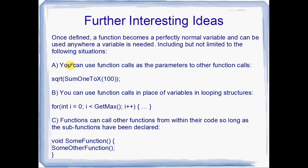Further interesting ideas. So once defined, a function becomes almost exactly the same as a variable of its own return type. So if a function returns int, then we can use a call to that function wherever we can use an integer variable. If it returns double, then we can use a call to that function wherever a double is required.